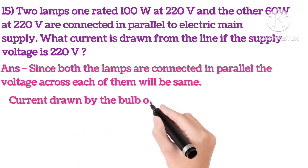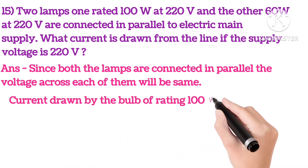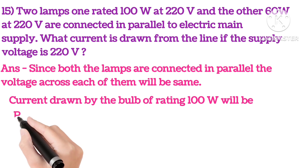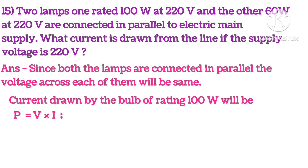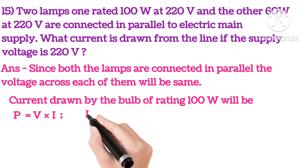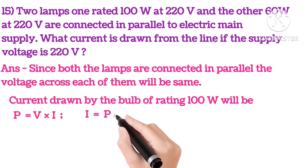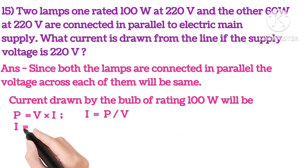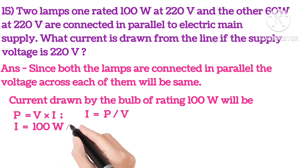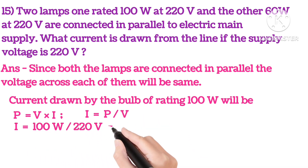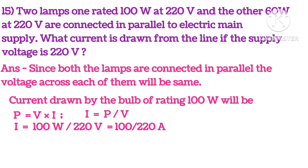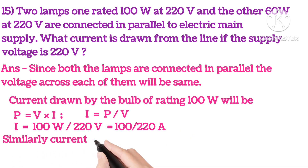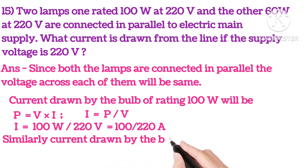So current drawn by the bulb of rating 100 watts will be P equals V into I, so I equals P upon V. Putting in the values, we get current equals 100 upon 220 amperes.